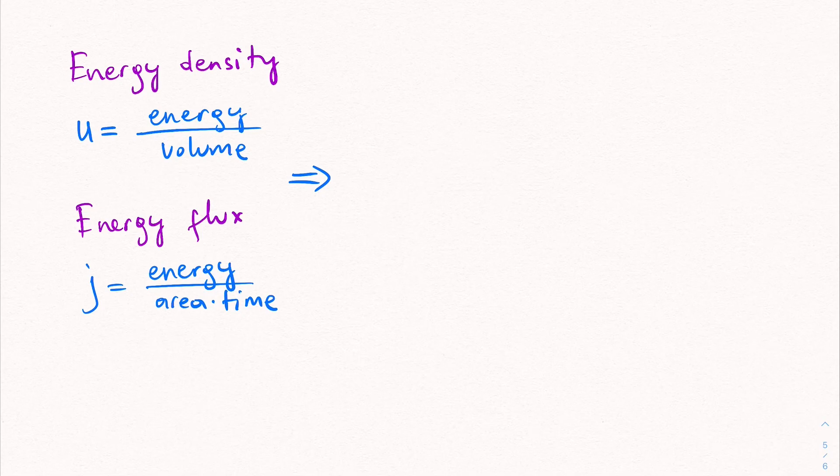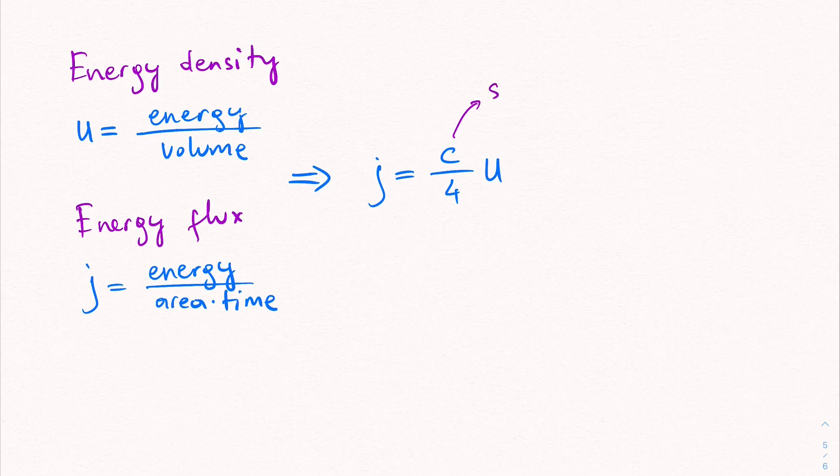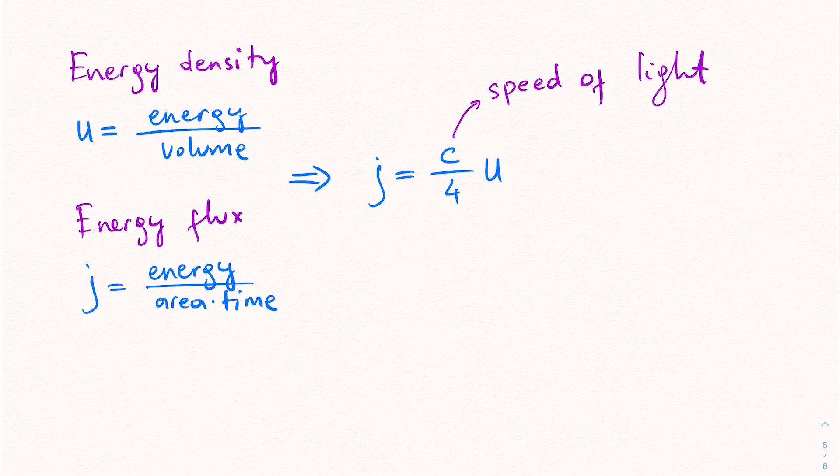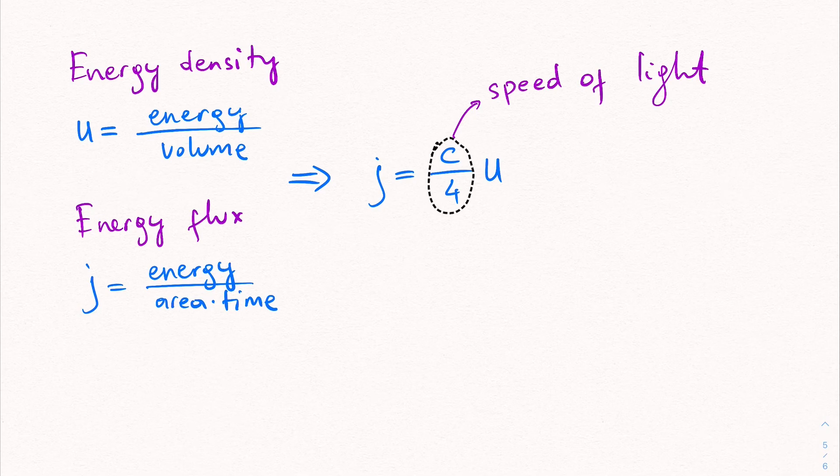Now if you look at the light, especially the light, the energy flux is related with the energy density like this. Here, this is the speed of light. So this c is speed of light. And our question is why this is the case.